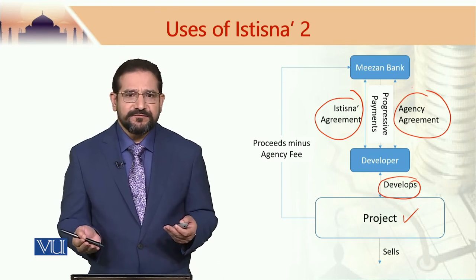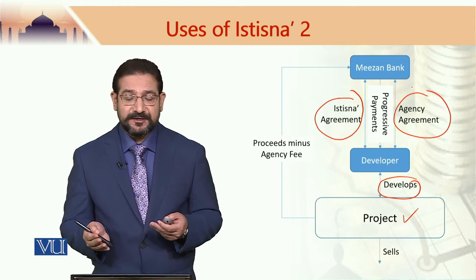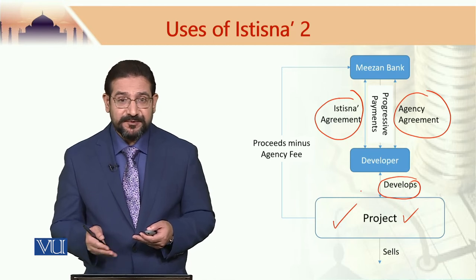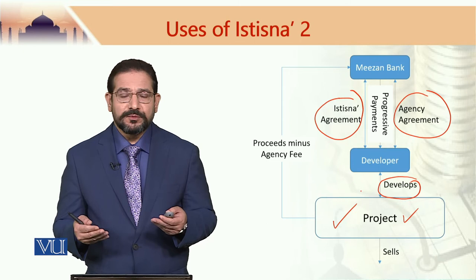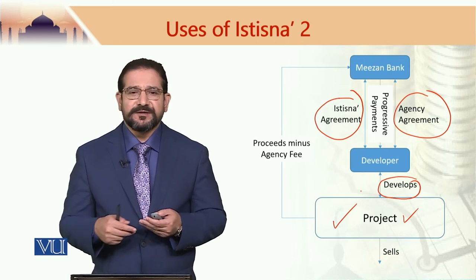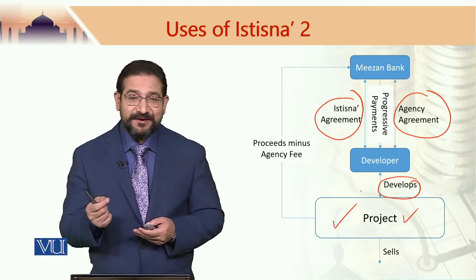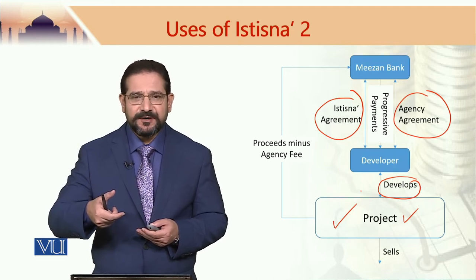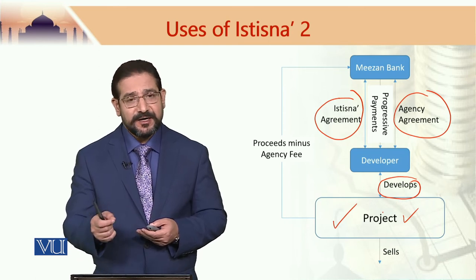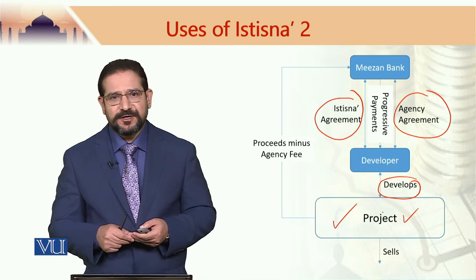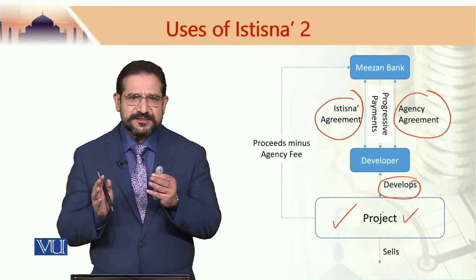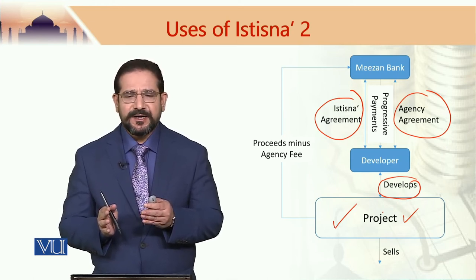Say after one year or one and a half years — whatever was the agreement between the bank and the developer — the property is developed. Then the sales agent, which happens to be the developer, sells that property to the end users. The way things happen, properties are actually sold even during the construction period as well. The bank would benefit from the value creation by this property development, minus the agency cost which the developer receives as sales agent of Mizan Bank, and minus the construction cost as per the istisna agreement between the two parties — i.e., Mizan Bank and the developer.